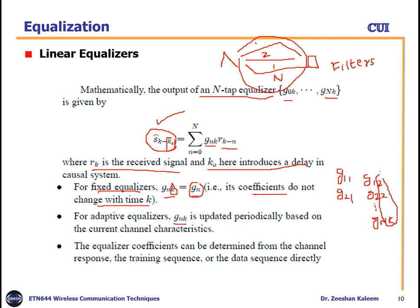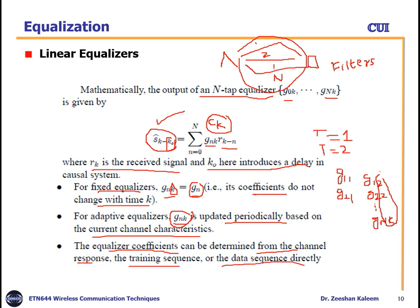For an adaptive equalizer, g_n(k) is updated periodically based on current channel characteristics, because as the channel varies each time period has different characteristics and requires different coefficients. The equalizer coefficients can be determined from the channel response — g_n(k) should be opposite to the channel response c_k — using either a training sequence or data sequence directly, which we will discuss in the next slide.